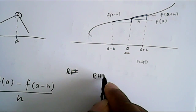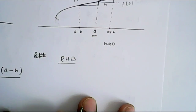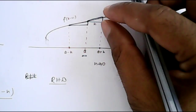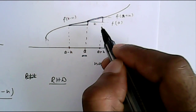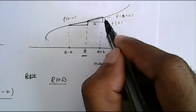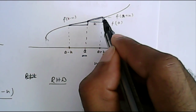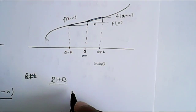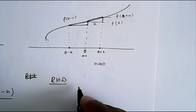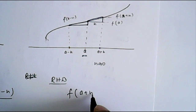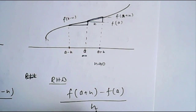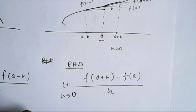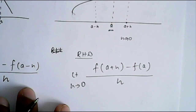Similarly, what will be the right hand derivative? The right hand derivative — we have to find out the slope. Slope is equal to tan theta, and tan theta is equal to height upon base. So the right hand derivative will be equal to f of a plus h minus f of a, upon h, where limit h tends to zero.